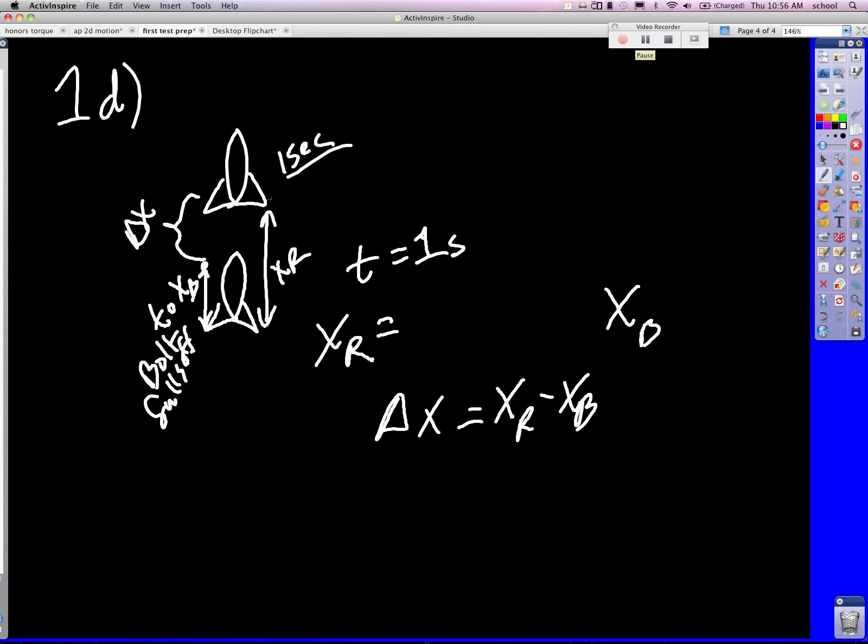And we want to know X. Can we come up with that using those numbers? Yeah, absolutely. Everything's there. 67 times one second plus one half times 30 times one second squared. So that's going to be 67 plus 15, which gives you 82 meters.